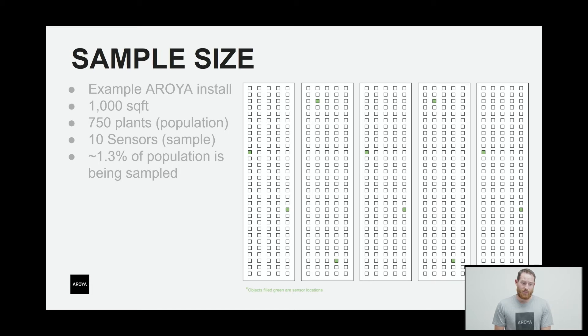Even at that one per hundred square foot sensor density, we're only analyzing 1.3 percent of the population. The larger that sample size, the better that we can attribute plant growth and the better snapshot that we have of crop uniformity across the room.